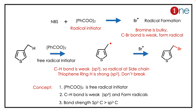Here, NBS and peroxide are used — peroxide is a radical initiator, meaning it will produce radicals freely. A bromine radical is formed because bromine is bulky and the C-Br bond is weak, so it forms the radical. Once the radical is formed it will not stop, so again you need a radical to pair it up.